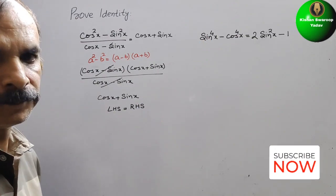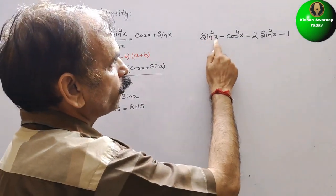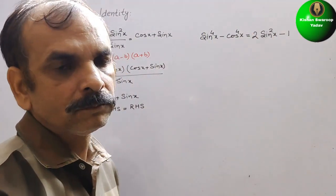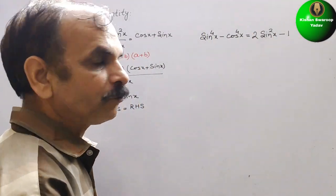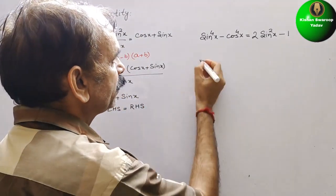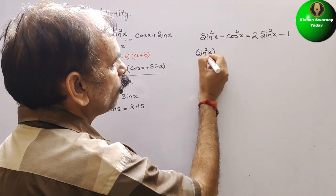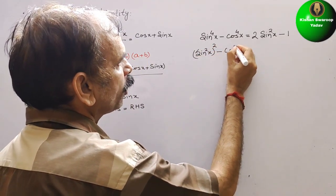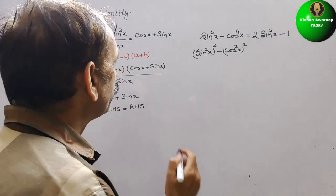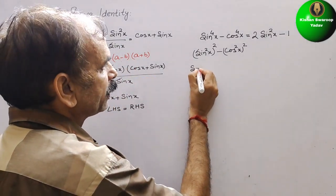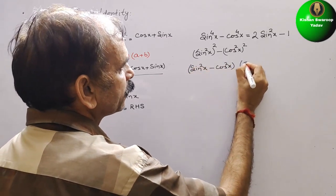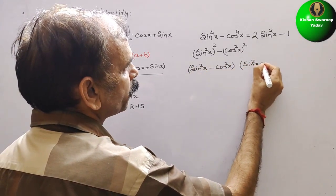Now comes your second question. They have given you sin to the power of 4x minus cos to the power of 4x is equal to 2 sin squared x minus 1. First we will convert this into a squared minus b squared. So it will be sin squared x whole square minus cos squared x whole square, which is now in the form a squared minus b squared. We write it as sin squared x minus cos squared x, and sin squared x plus cos squared x.